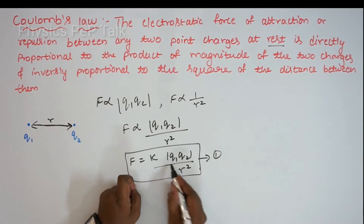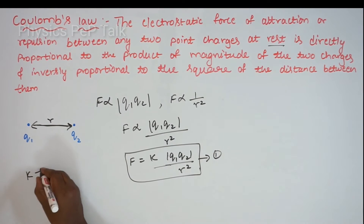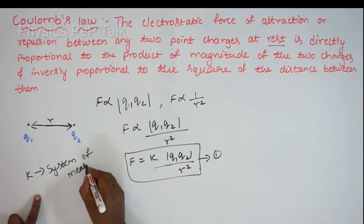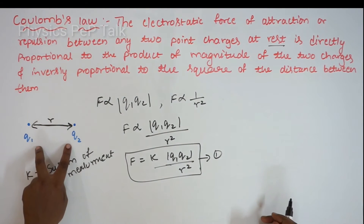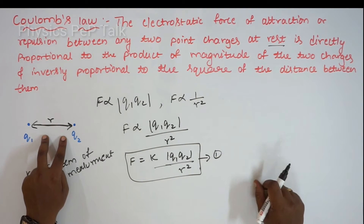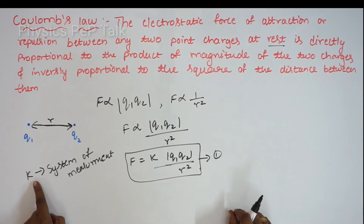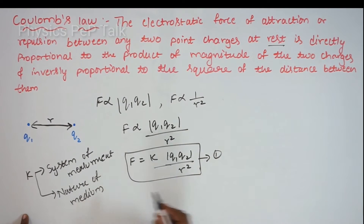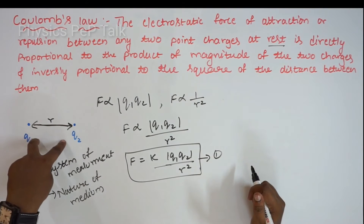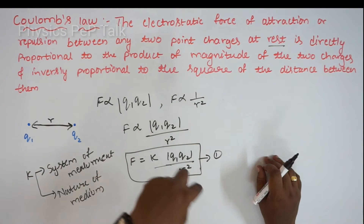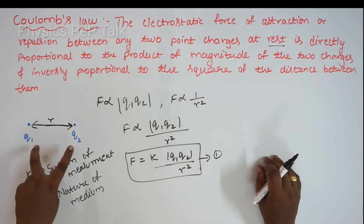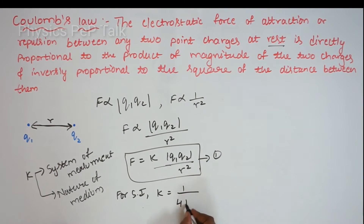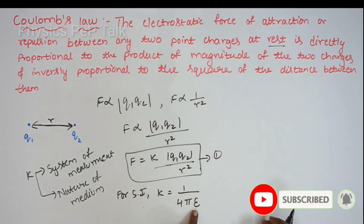The value of K depends on two factors. The first factor is the system of measurement — in SI, MKS, or CGS systems the value of K differs. The second factor is the nature of the medium in which the charges are placed. For the SI system, the value of K is given by 1 divided by 4π epsilon, where epsilon is the permittivity of the medium.